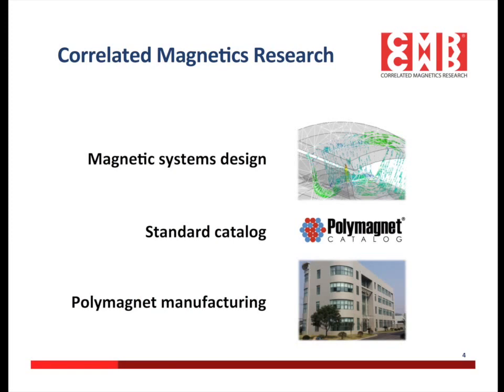Finally, we're a manufacturing company that uses our magnetization technology to produce polymagnets, including in high volume in China for delivery to your manufacturing plant or your manufacturing partners. Polymagnets in the polymagnet catalog have a wide variety of functionality and are available in prototyping quantities for delivery as soon as tomorrow. I'll talk about polymagnet supply in more detail at the end of this webinar.